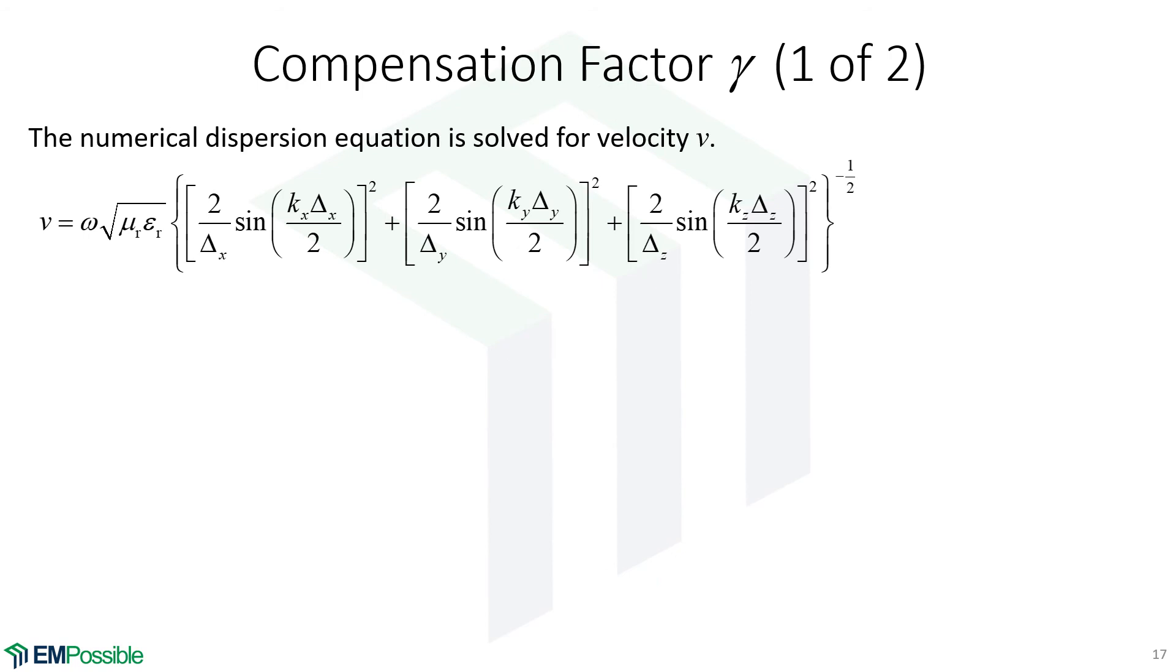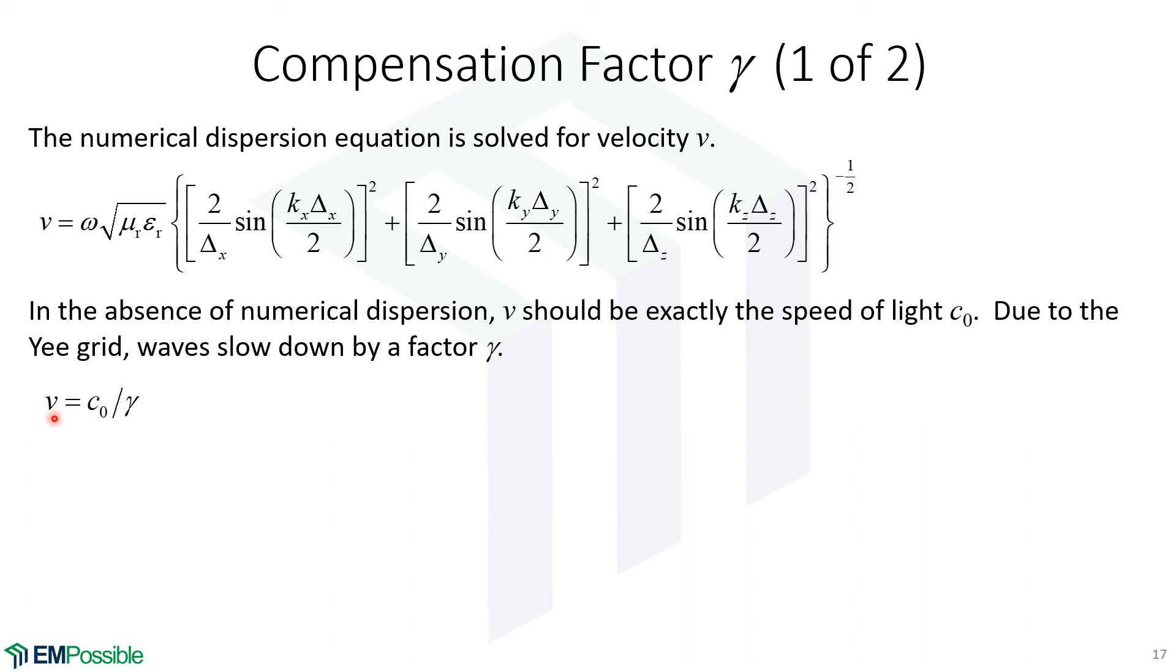So how can we compensate for this? We can come up with something that we call a compensation factor. Let's go back to the dispersion relation for our Yee grid, and we solve this for that velocity term. This is the thing that we would like to be equal to the speed of light, but it's different. In fact, the actual velocity, our numerical velocity on the Yee grid, is the speed of light divided by this factor. So we can think of this as the refractive index of the dispersion on our grid, the factor by which the wave slows down relative to the speed of light.